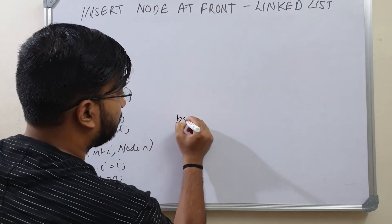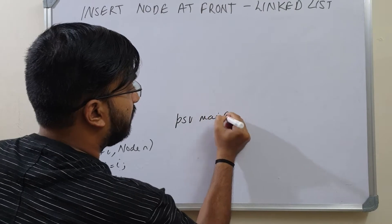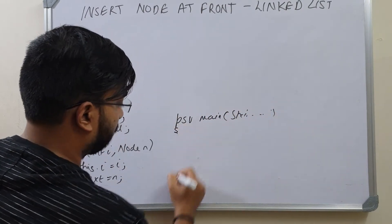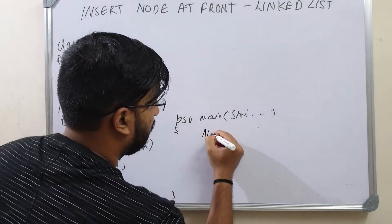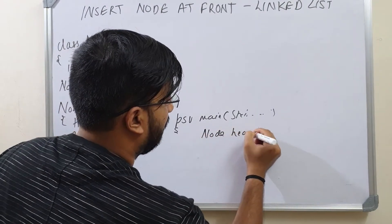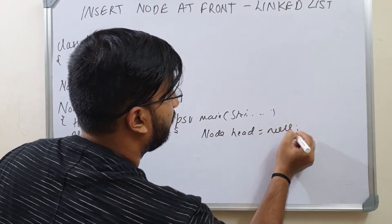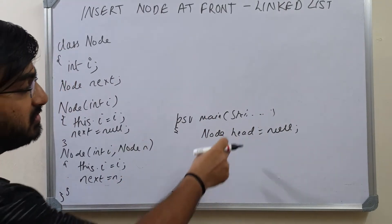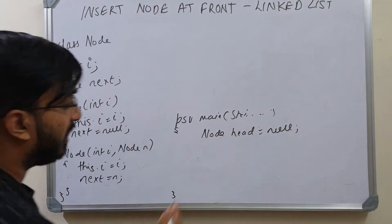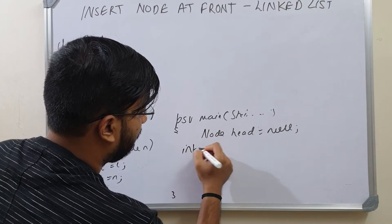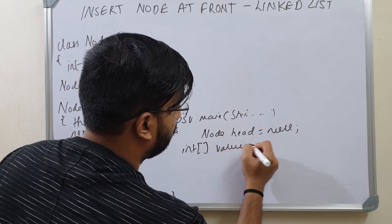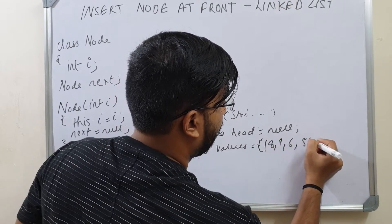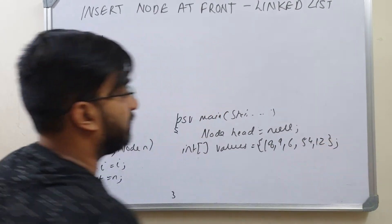In the public static void main, I will take a node head and set it to null to indicate an empty linked list. This will be the head of my linked list. I am going to insert new values using this head. I'll take values: int values equals 18, 9, 6, 54, and 12.